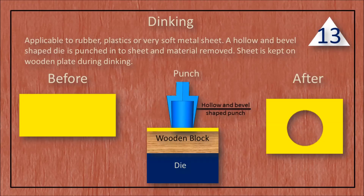Dinking is applicable to rubber, plastics, and very soft metal sheet. A hollow and bevel-shaped die is punched into the sheet and material is removed. The sheet is kept on a wooden plate during dinking.